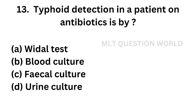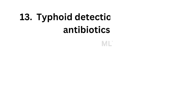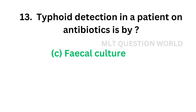Question number 13. Typhoid detection in a patient on antibiotics is by: Option A, Widal test; Option B, blood culture; Option C, fecal culture; Option D, urine culture. The correct answer is Option C, fecal culture. Typhoid detection in a patient on antibiotics is by fecal culture.